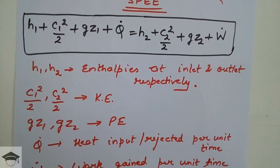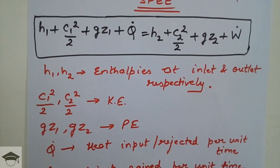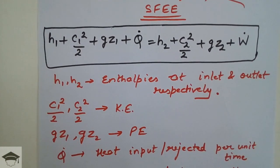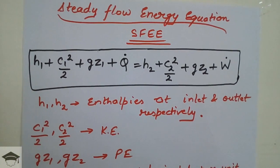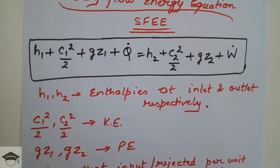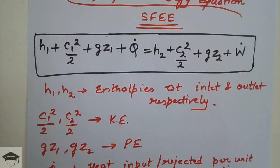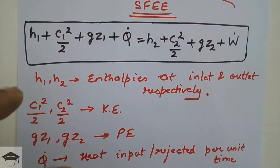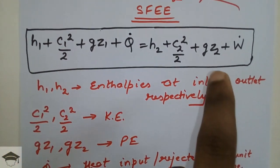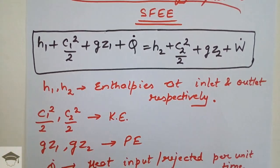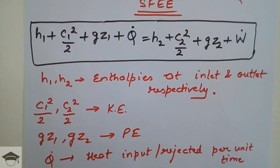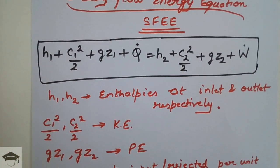Similarly, if heat interaction is zero in a problem, you set Q̇ equal to zero. If it is given that c1 is zero — meaning velocity at inlet is zero — or c2 is zero — velocity at outlet is zero — you substitute accordingly. This is the main general form of the equation; the terms sometimes get cancelled depending on the given conditions.